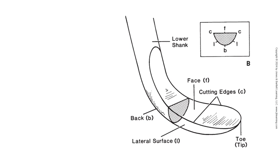Let's talk about the parts of a curette blade. You have your face, and the edges are your cutting edges. Then you have your toe or tip — a curette is going to have a toe, and a sickle scaler is going to have a tip. Then you have your lateral surfaces. Your cutting edge is where the face and the lateral surface meet. Then you have the back of your instrument, which is a half-moon or semicircular shape in cross-section.